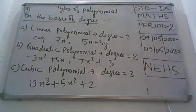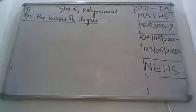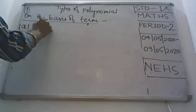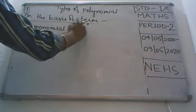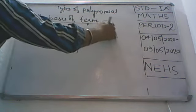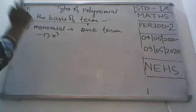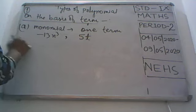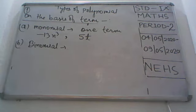Now on the basis of terms. The first type is called monomial — 'mono' means one, like monorails have only one bogie. So monomial has only one term. Example: minus 13x³ is cubic but in terms it is monomial. Next is binomial — 'bi' means two, like a bilateral cricket series where two nations play. Binomial means two terms.